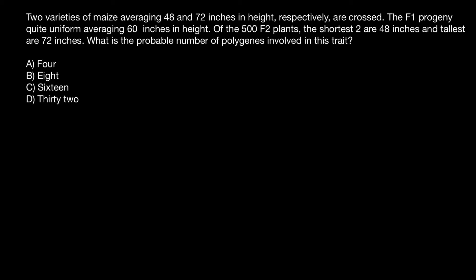Hello and welcome to Nikolai's genetics lessons. Today's problem comes from one of my subscribers from India. Two varieties of maize averaging 48 and 72 inches in height respectively are crossed. The F1 progeny are uniform, averaging 60 inches in height. Of 500 F2 plants, the shortest two are 48 inches and the tallest are 72 inches. What is the probable number of polygenes involved in this trait?